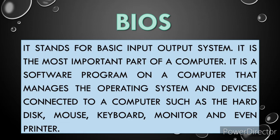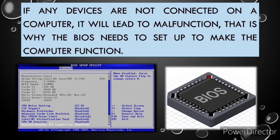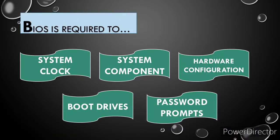BIOS is the most important part of a computer. It is a software program on a computer that manages the operating system and devices connected to the computer such as the hard disk, mouse, keyboard, monitor, and even printer. If any devices are not connected, it will lead to malfunction. That is why the BIOS needs to be set up to make the computer function. BIOS is required to set the system plug, enabling and disabling certain system components, hardware configuration, selecting boot drives, and setting password prompts.